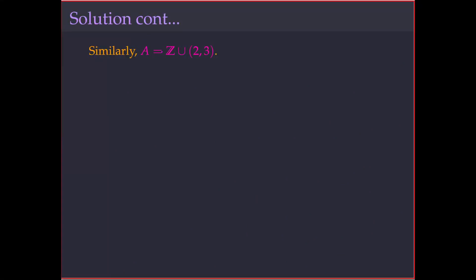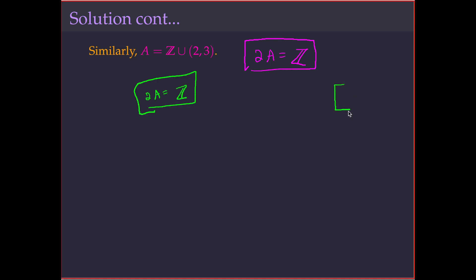The third example is A = ℤ ∪ (2,3), and similarly ∂A = ℤ. I encourage you to write a formal proof for all three cases. If you are unable to, go to the website linked in the description where I have written a formal proof of why the boundary of each A equals ℤ.